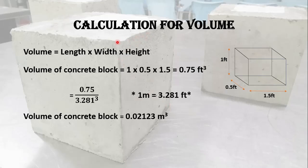For that, simply multiply the length, width, and height of the block. Here you can see a volume of 0.75 ft³. Now convert it into SI units by dividing by the factor 3.281³, because we have taken our density in SI units. So the volume of the concrete block is 0.02123 m³.